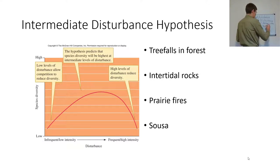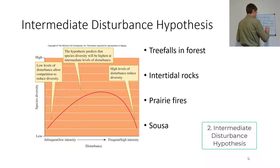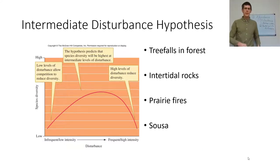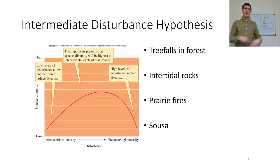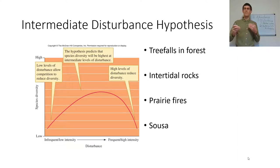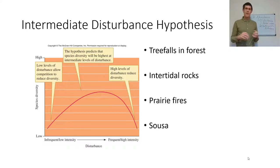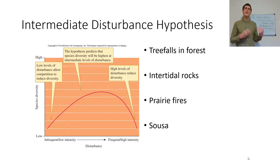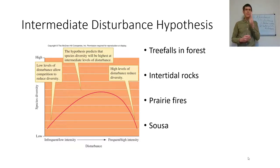The intermediate disturbance hypothesis: if you have too frequent and high-intensity disturbances, you'll have ruderals — R-selected species that like disturbance — but not high-competitive, long-lived species. With very infrequent disturbance, those highly competitive species dominate under conditions of minimal disruption and swamp out others. But in the middle, you have a combination — some individuals haven't been disturbed in a thousand years, some just germinated last week. That intermediate level is where you find the highest diversity.